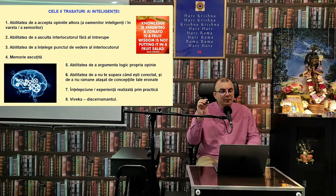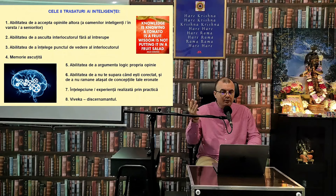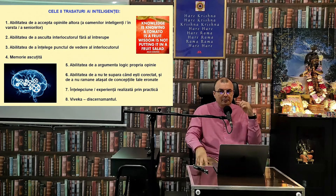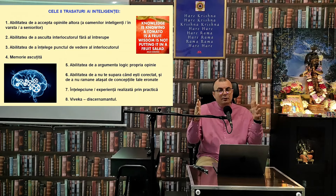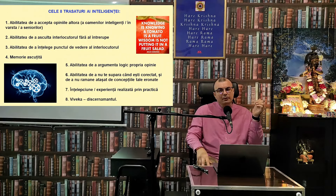Încă o trăsătură a inteligenței este memoria ascuțită, care din păcate în zilele de astăzi este complet distrusă — la tineret de consumul de substanțe, și de sexul ilicit pe care tineretul îl practică de la vârste foarte tinere. Din cauza aceasta, în acord cu Vedele, energia vitală este irosită și risipită aiurea. Tradiția yoghină vorbește despre brahmacharya — omul își pierde memoria, vitalitatea, inteligența și abilitatea de a rămâne concentrat. Aceasta este o problemă serioasă în zilele de astăzi.